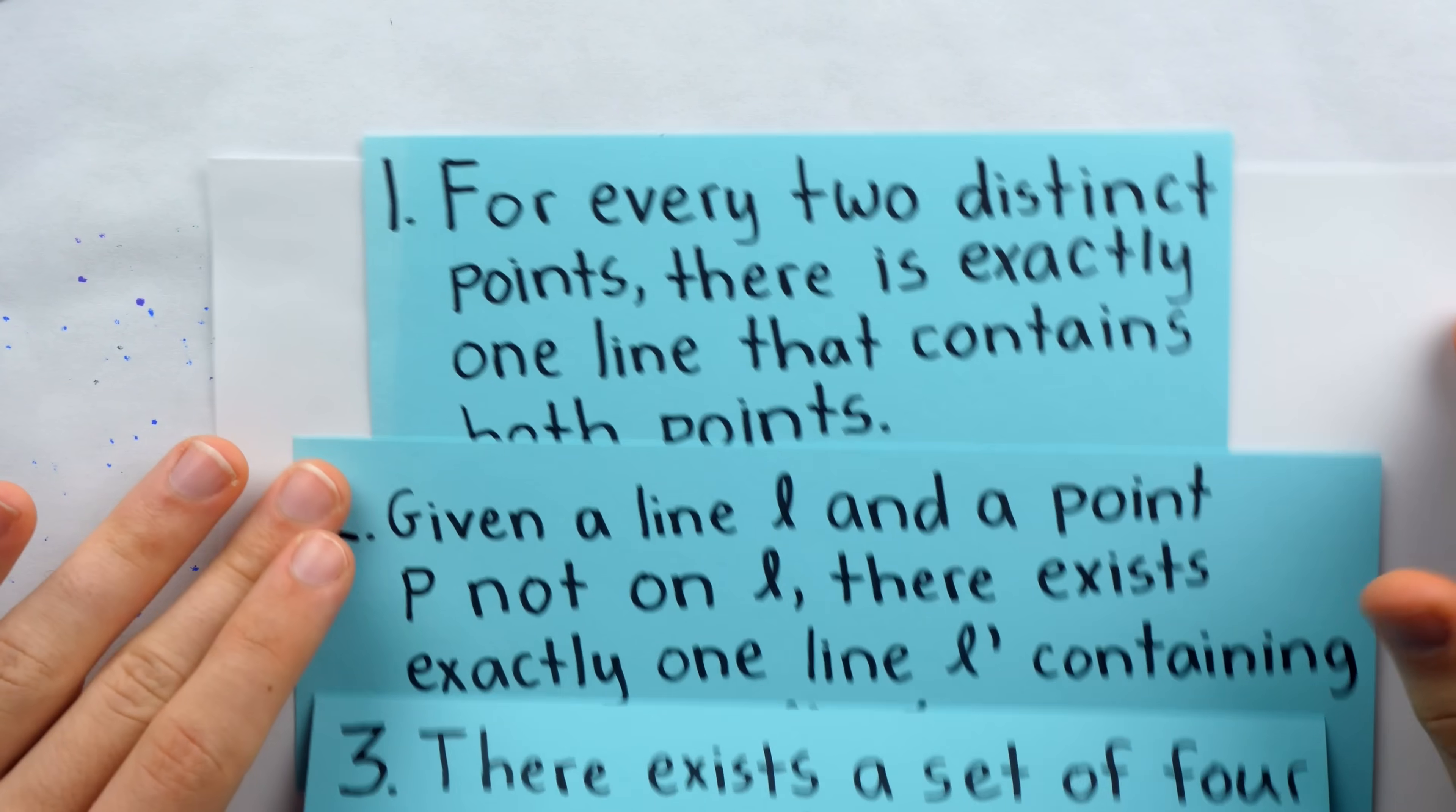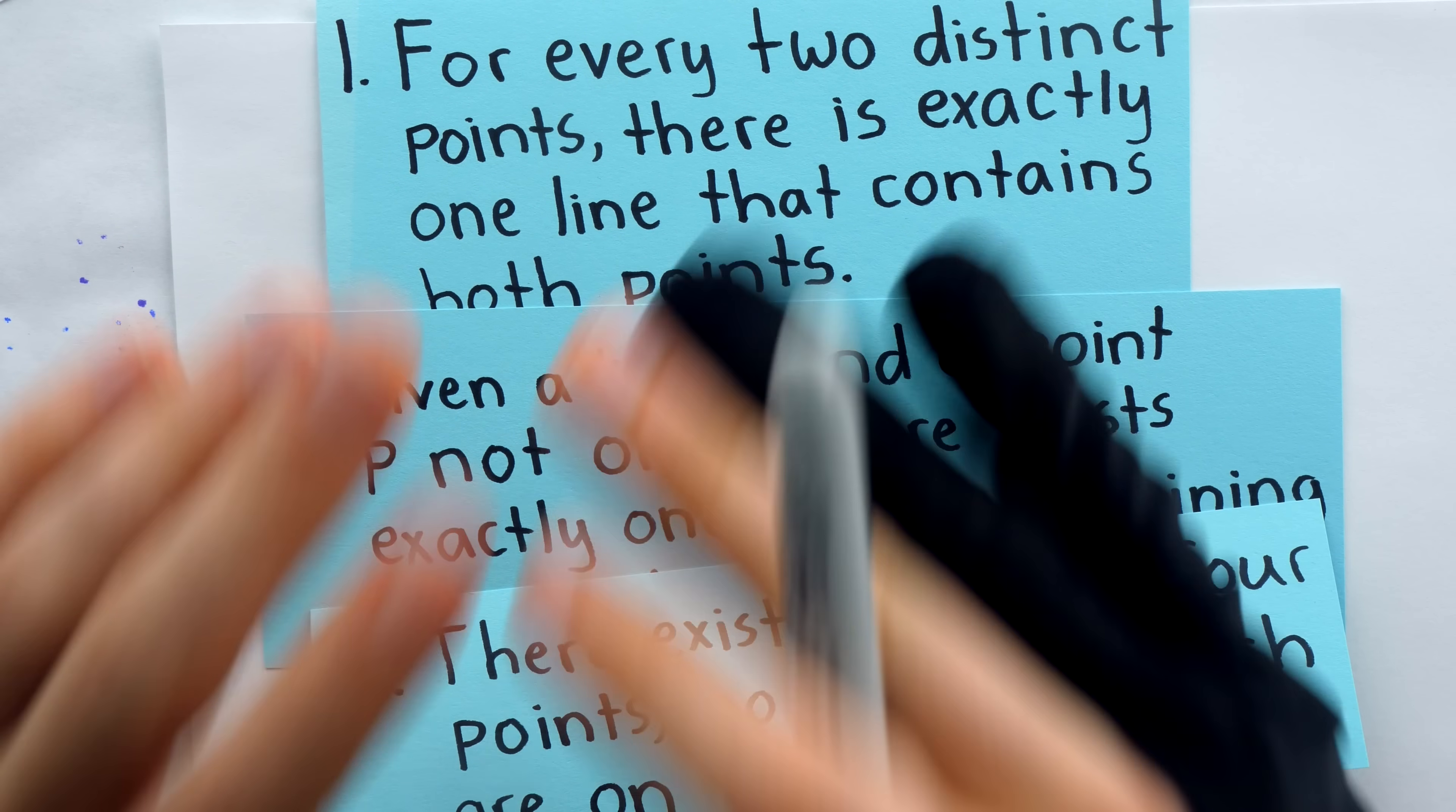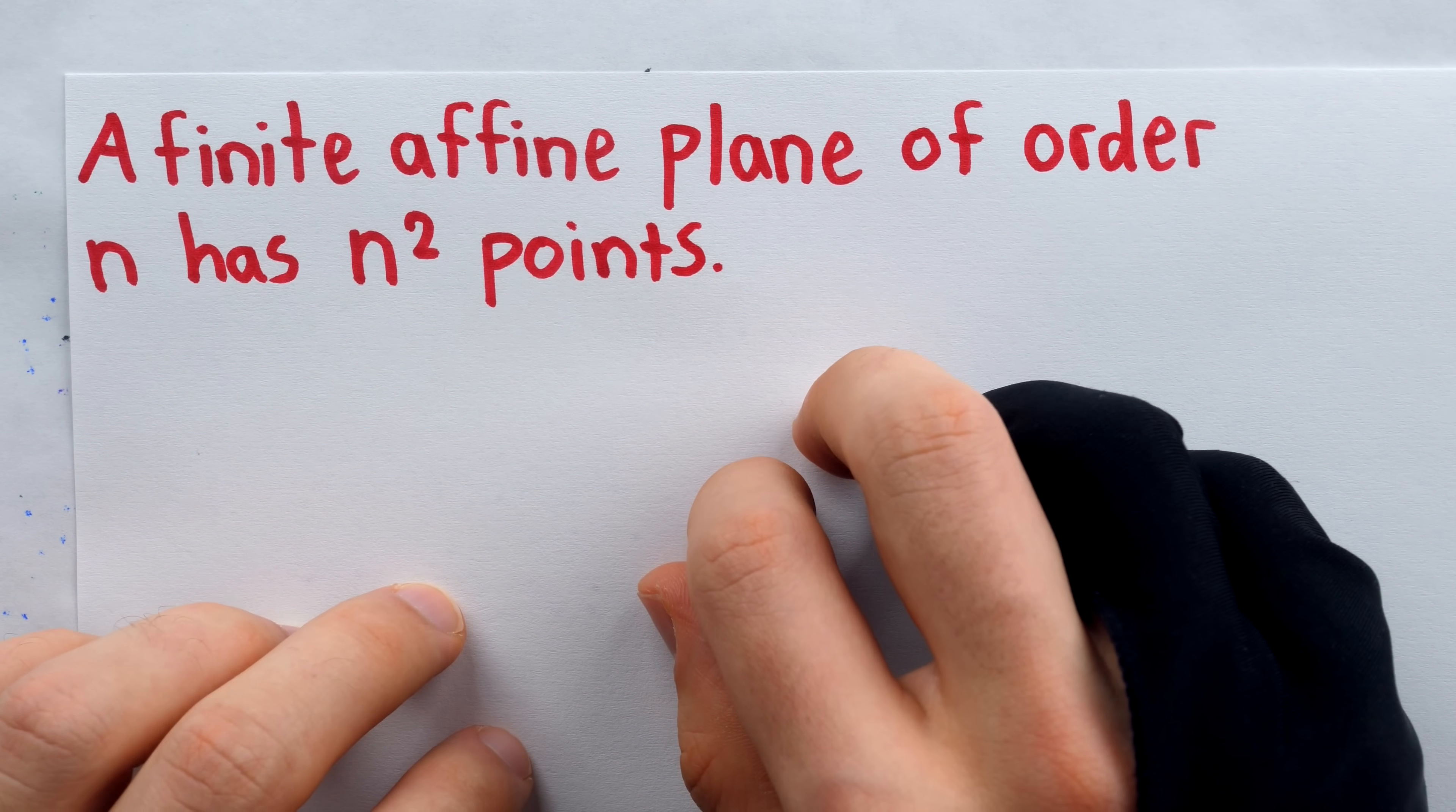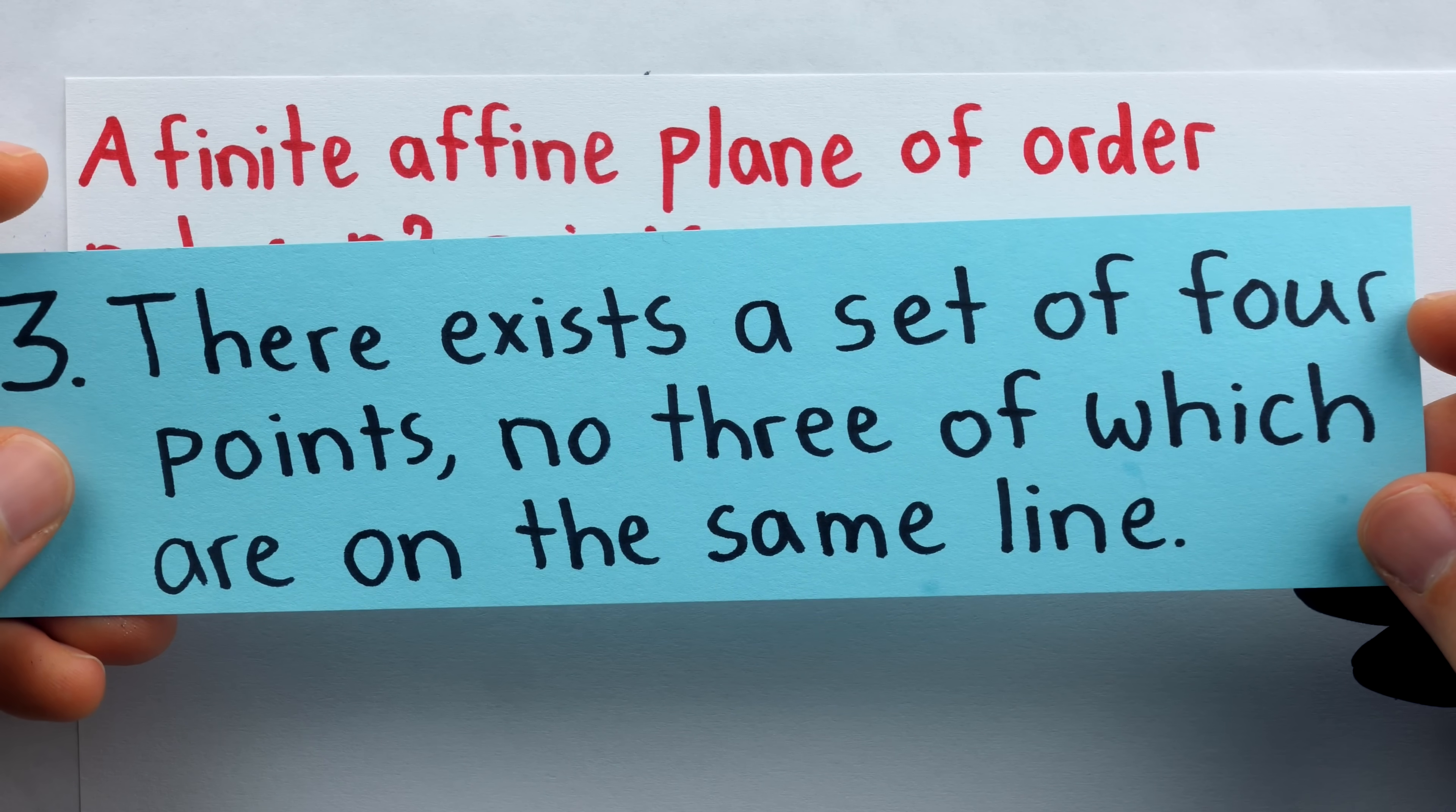And I want to finish by using our axioms for affine geometry to prove that fact. We're going to prove that an affine geometry of order two has exactly four points by proving the more general statement that an affine geometry of order n has n squared points. And remember that the order of a finite affine plane is the number of points on a line in that plane. And this proof is from the Joy Morris book on combinatorics. Link in the description if you want to check it out.